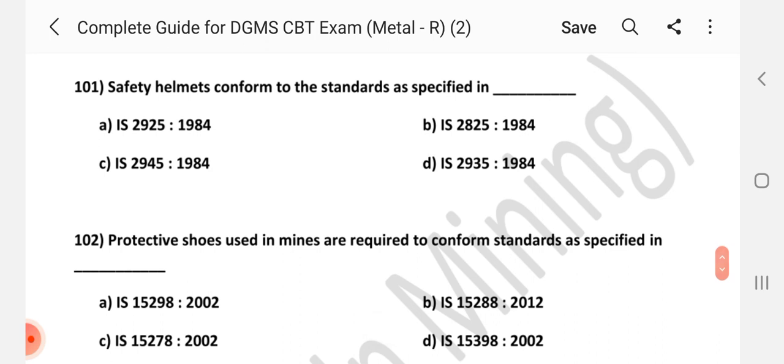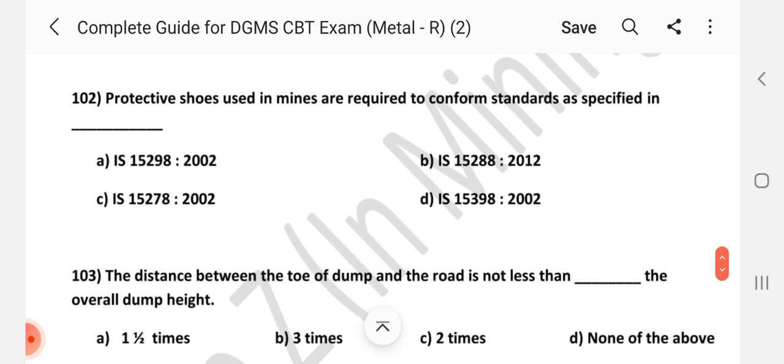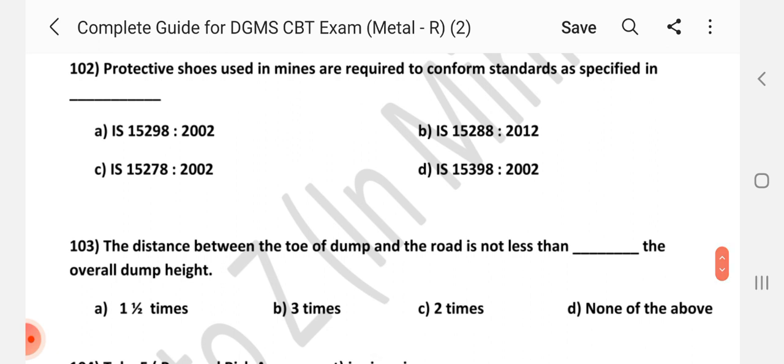Question number 101. Safety helmets confirmed to the standards are specified in dash. Answer is AIS 2925 comma 1984. Question number 102. Protective shoes used in mines are required to confirm standard as specified in dash. Answer is AIS 15298 2002.